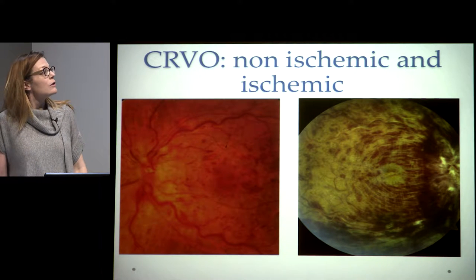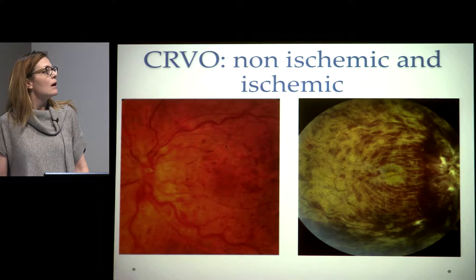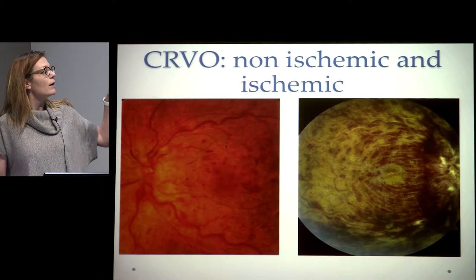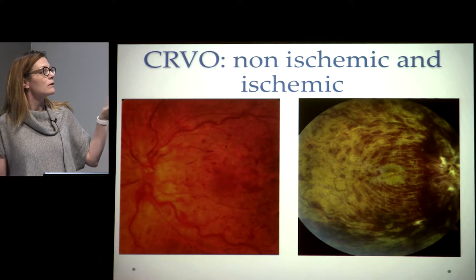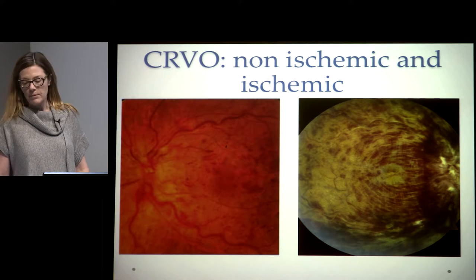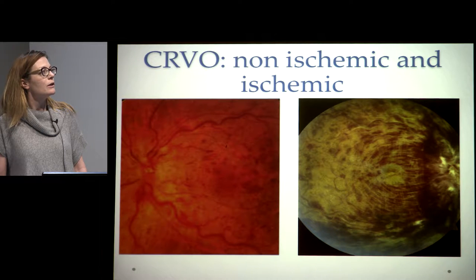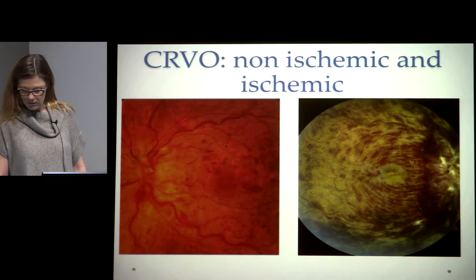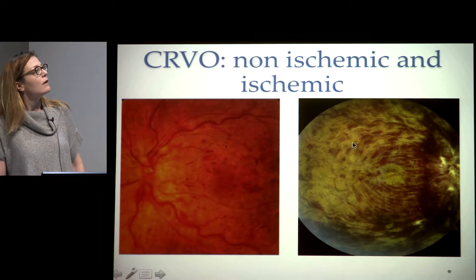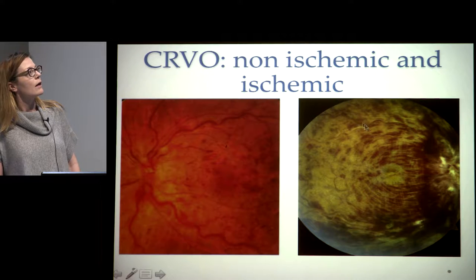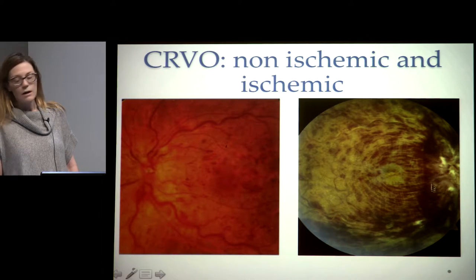These fundus photographs compare non-ischemic and ischemic central vein occlusion. On the left, the non-ischemic form shows dilated, tortuous, and engorged vessels with four quadrants of intraretinal hemorrhages, some optic nerve fullness and hyperemia. On the other side, the more severe ischemic variation shows very engorged, dilated vessels, severe hemorrhages with macular edema, cotton wool spots, and fulminant optic nerve edema.